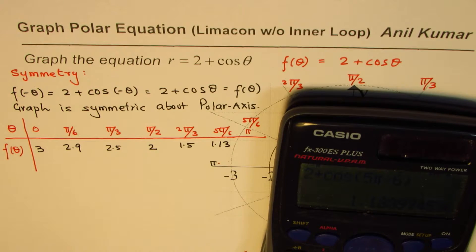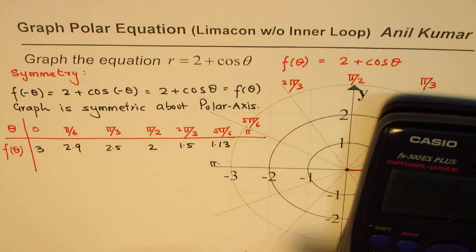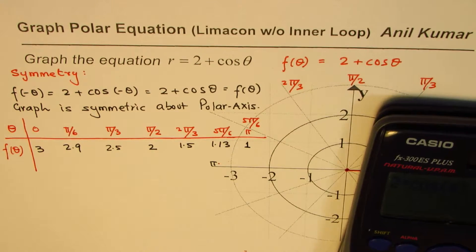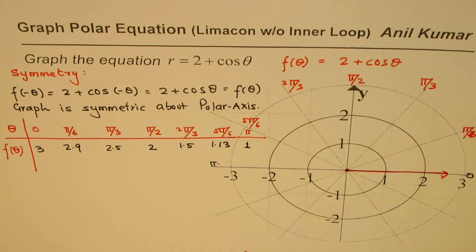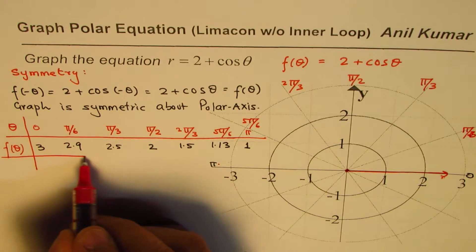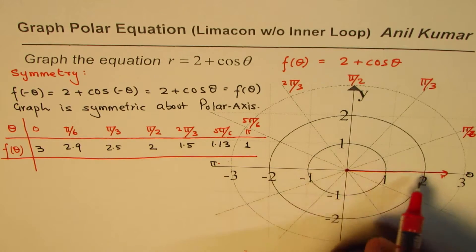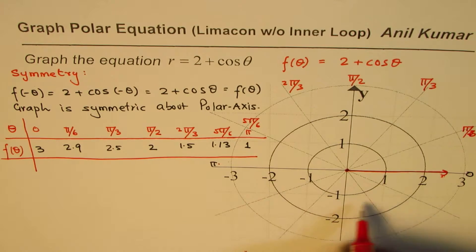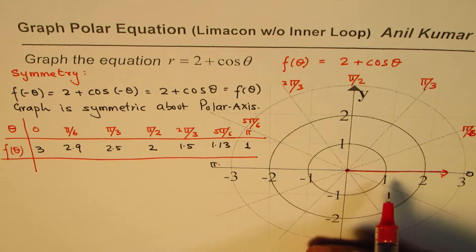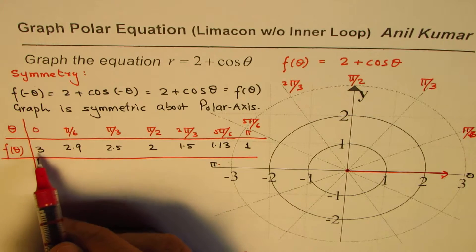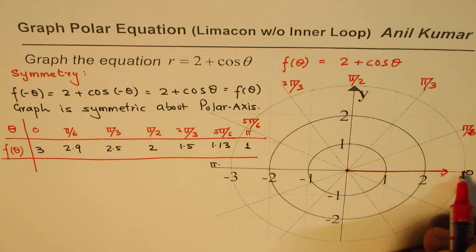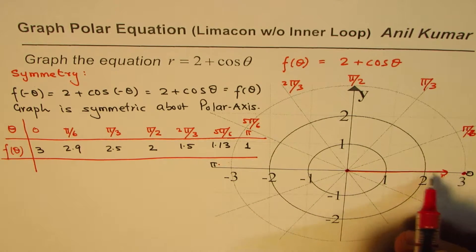And for π, you get equals to 1. Cos of π is minus 1, 2 minus 1 is 1. So we get these values. Once we get these values, we can plot them. So we'll get the upper half, and then we'll plot them and get the lower half values. So let's begin by plotting 0, 3. 0, 3 means point is right there. So this is 1, 2, and 3. 0 radians with polar axis.